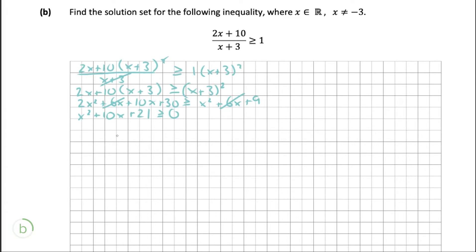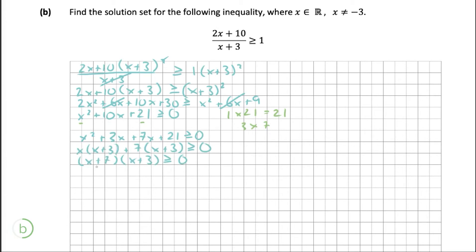Now we want to solve this quadratic equation. We multiply 1 times 21 to get 21, and the factors of 21 that add together to give us 10 are 3 and 7. We put them in and solve the equation as normal. If this were a normal quadratic equation without the inequality, we would have x equals minus 7 and x equals minus 3. But because this is an inequality, we need to find the solution set.